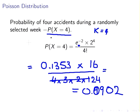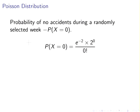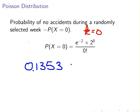Let's look at the second one now. Probability of X equal to 0. Here k is equal to 0, so we have 0.1353 times 2 to the power of 0, which is always 1 - anything to the power of 0 is always 1. And we're going to divide that by 0 factorial. Zero factorial is also 1.